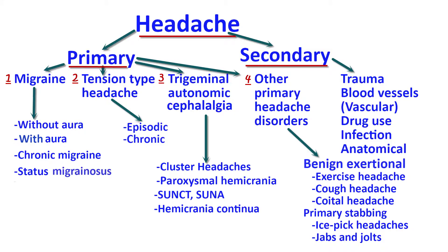Headaches can be divided into two main groups: primary headaches and secondary headaches. Primary headaches are those that arise by themselves and are not caused by an underlying illness or anatomical abnormality. Secondary headaches, on the other hand, are always the result of some other process that is taking place in the body.